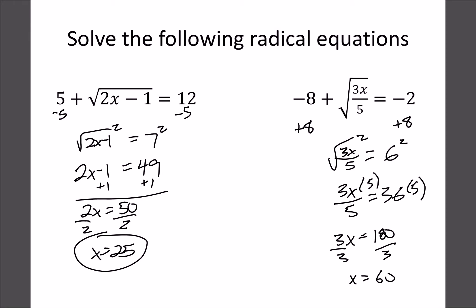If we plug it back into the original, so 3 times 60 is 180, divided by 5, this is 36, square root of 36 is 6, negative 8 plus 6 is negative 2, so that's a good answer as well.